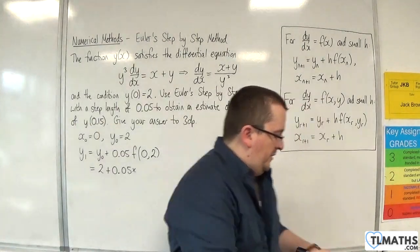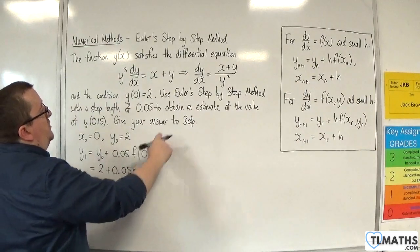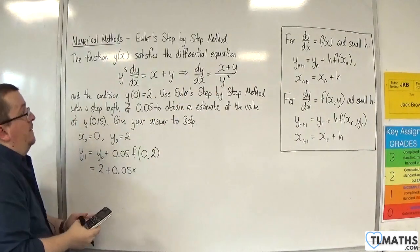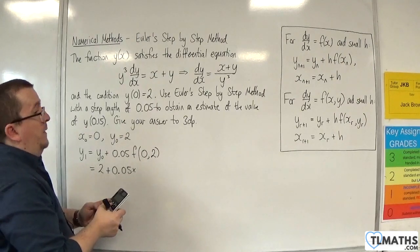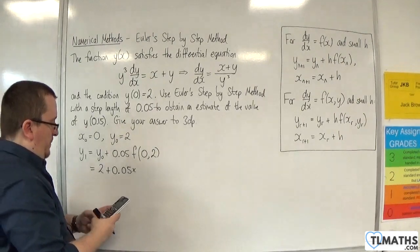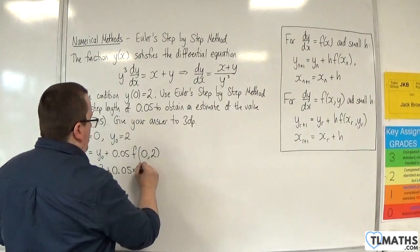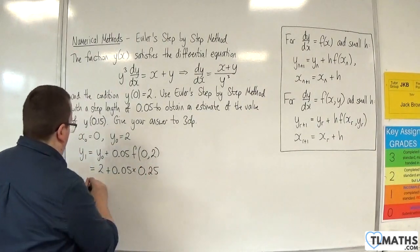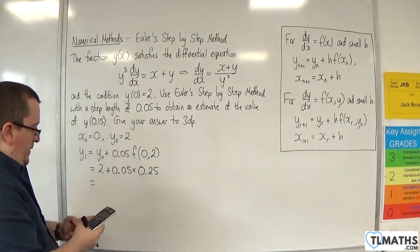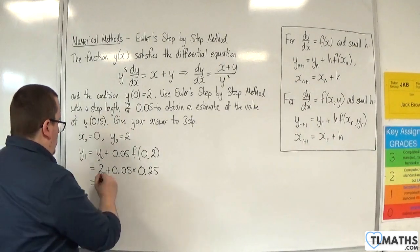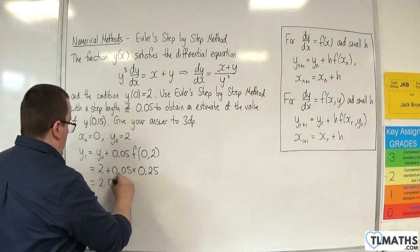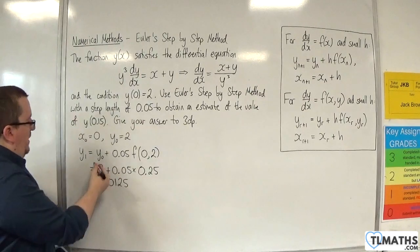So we've got to substitute 0, x₀, and 2 into that right-hand side there. So we're going to have (0 + 2)/(2³), so 1/4, so 0.25. So 0.25 times 0.05 plus 2 gets me 2.0125, so that's my y₁.